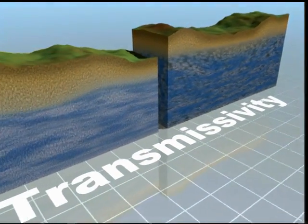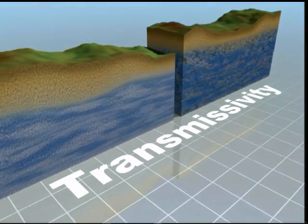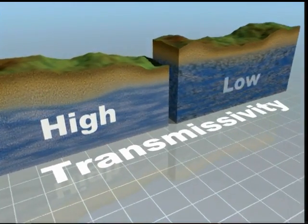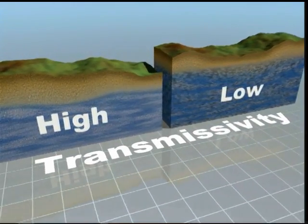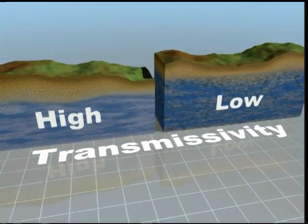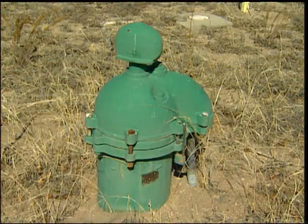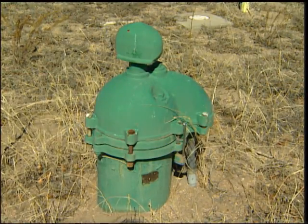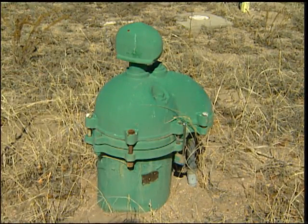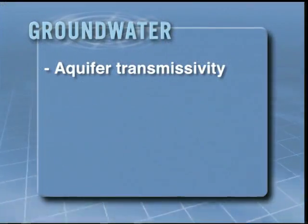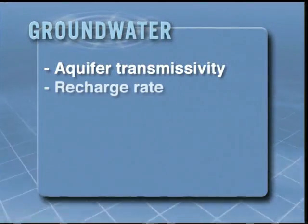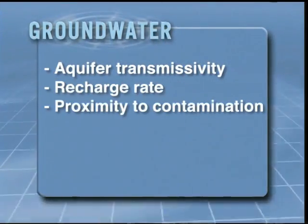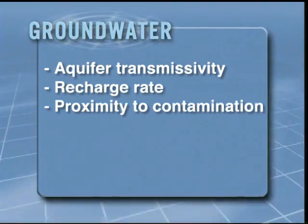Transmissivity indicates the ability of water to flow through an aquifer and provides a means to compare the productivity of different aquifers. The quantity and quality of groundwater depends on factors such as the aquifer transmissivity, the recharge rate, and proximity to potential sources of contamination.